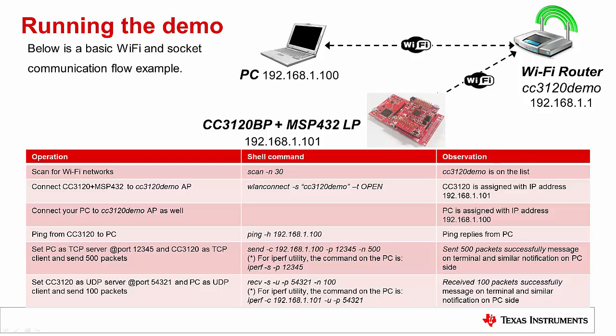There are many networking capabilities in this demo. As one example, we provide a basic Wi-Fi and socket communication. You will need a CC3120 booster pack plus an MSP432 launchpad, a PC and an access point, and any socket utility installed on the PC. Scan for wireless networks and connect your CC3120 and PC to the same AP. See that the CC3120 will ping the PC. Set the PC as a TCP server and the CC3120 as a TCP client and send 500 packets. Follow the shell commands as shown and a 'sent 500 packets successfully' message should appear on the terminal, and a similar message on the PC.